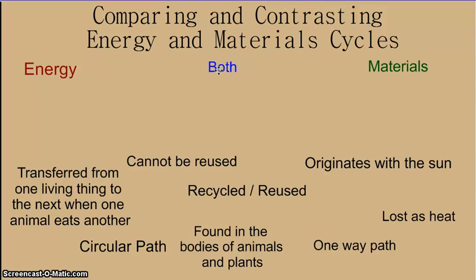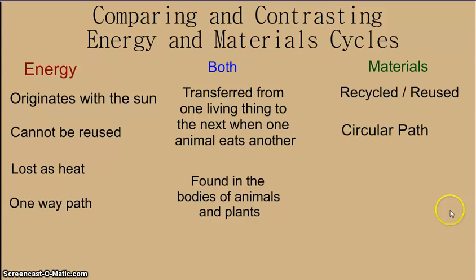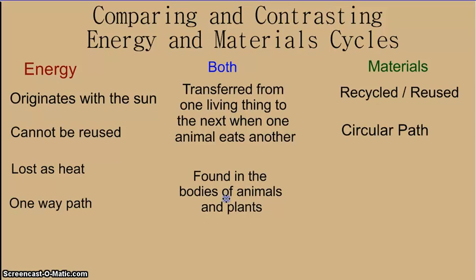Here is the arrangement. Energy originates with the sun — that's the source of all energy for ecosystems — it cannot be reused, it's lost as heat, and it follows a one-way path, which is why a food chain goes in one direction. Materials, on the other hand, are recycled or reused and follow a circular path, going back and forth from one place in the ecosystem to another repeatedly. Both are found in the bodies of animals and plants, and both are transferred from one living thing to the next when one animal eats another — the food contains both materials like carbon and energy.